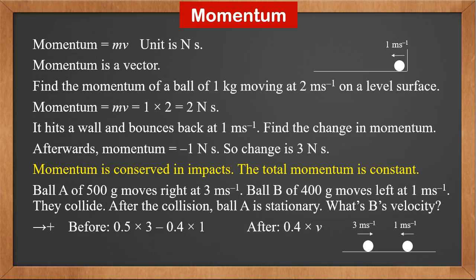Taking the right direction as positive, before the collision the total momentum is 0.5 times 3 minus 0.4 times 1. After the collision, the total momentum is 0.4 times V. These two should be equal, so 0.5 times 3 minus 0.4 times 1 equals 0.4V. Therefore, V is 2.75 meters per second, moving to the right.